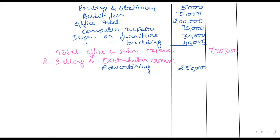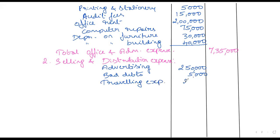Bad debts: 5,000. Traveling expense: 20,000. Commission paid: 75,000.